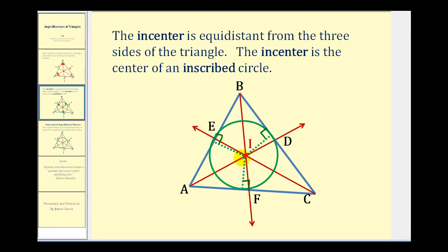The distance is not measured along the angle bisector. And as you can see, since the incenter is equidistant from the three sides of the triangle, we can construct a circle inside the triangle. So the incenter is the center of what we call an inscribed circle.